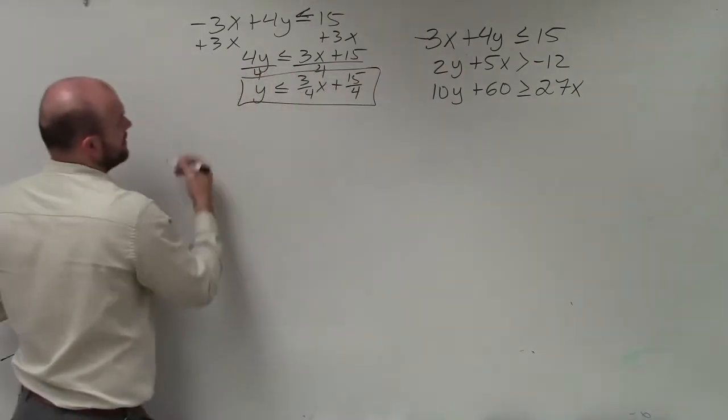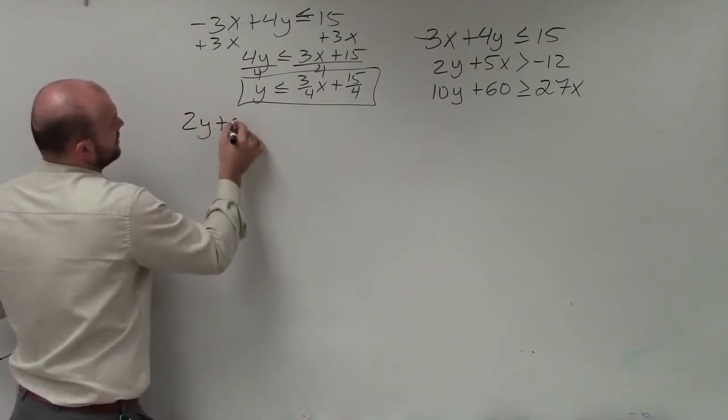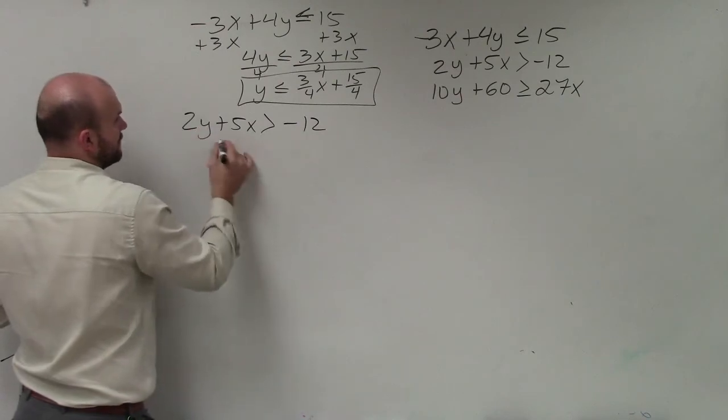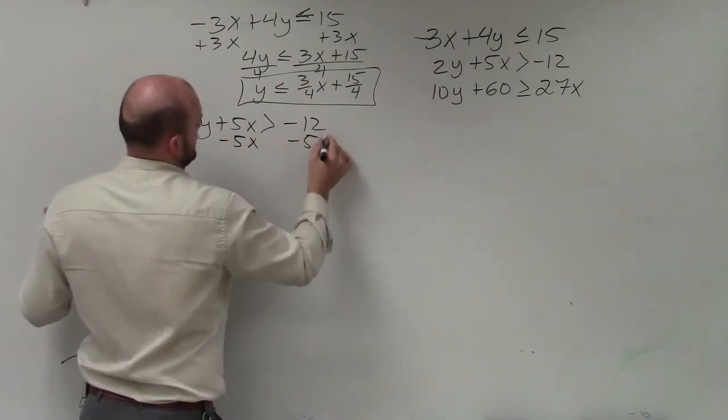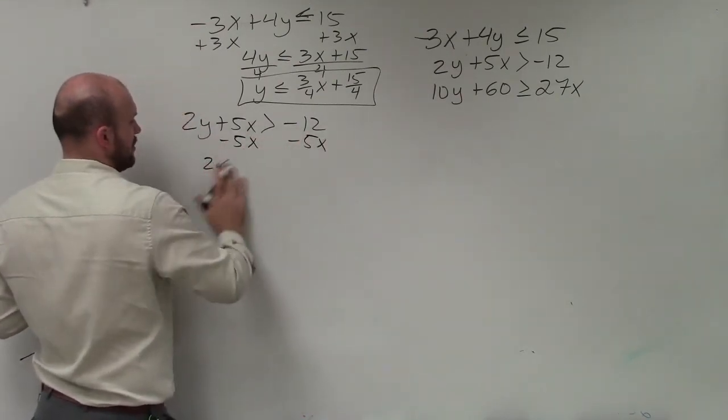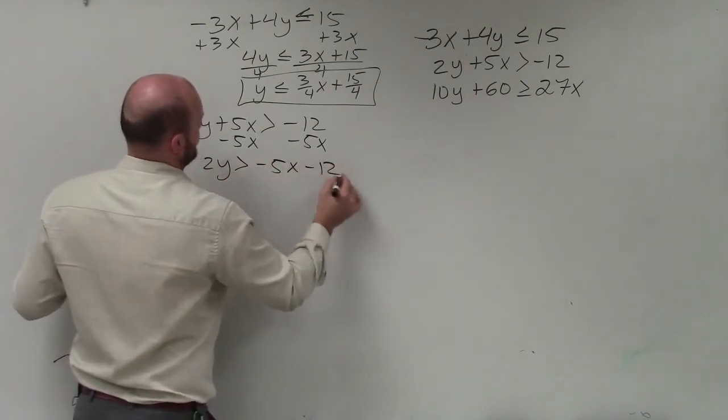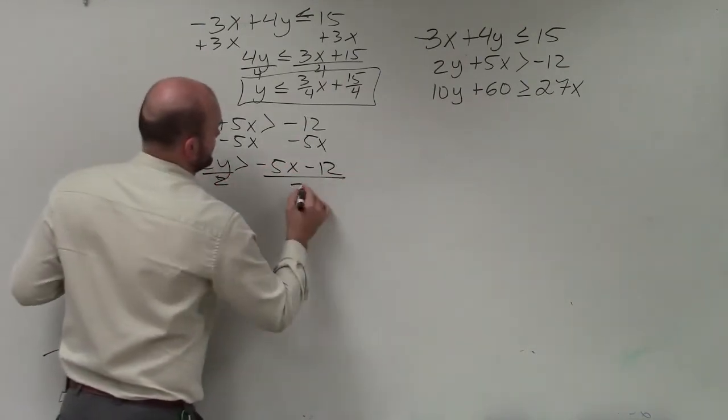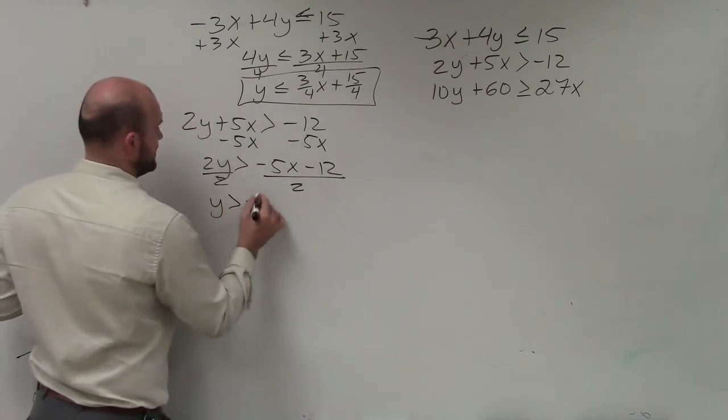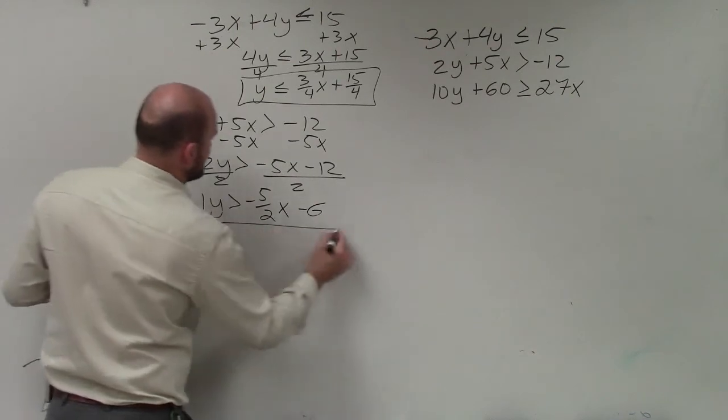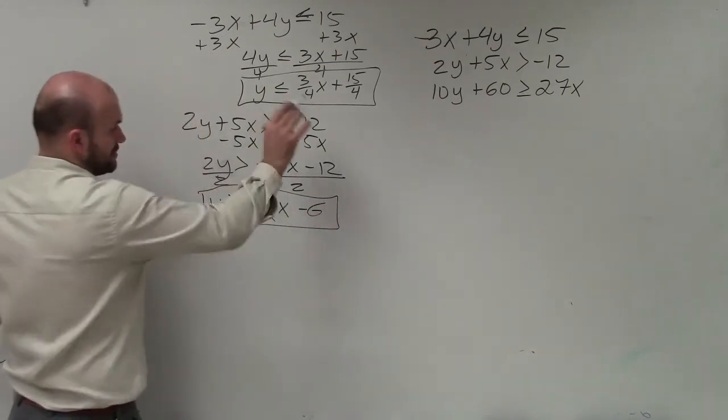All right, so we'll have that one. Then I do 2y plus 5x is greater than negative 12. Again, to solve for y, I'll subtract the 5x. And I'm left with 2y is greater than negative 5x minus 12. Divide by 2. y is greater than negative 5 halves x minus 6. That's my second equation.